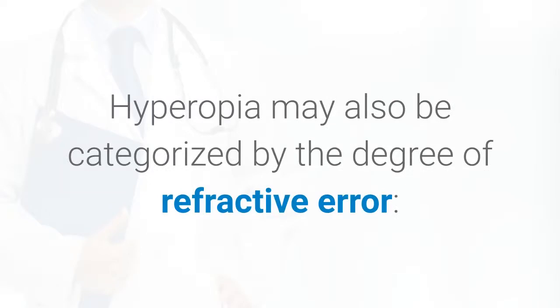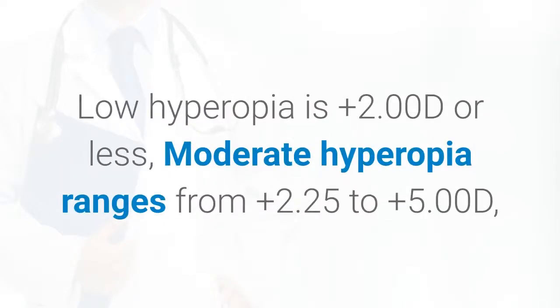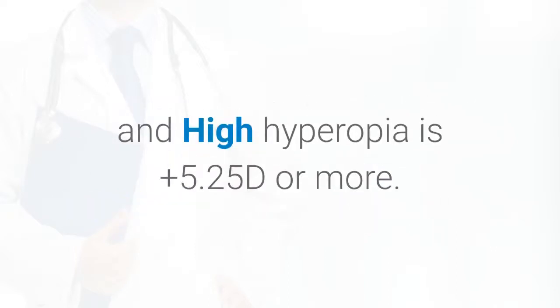Hyperopia may also be categorized by the degree of refractive error. Low hyperopia is plus 2.00 diopters or less. Moderate hyperopia ranges from plus 2.25 to plus 5.00 diopters, and high hyperopia is plus 5.25 diopters or more.